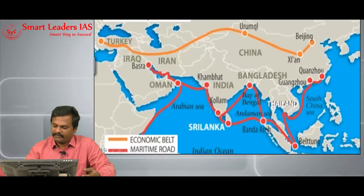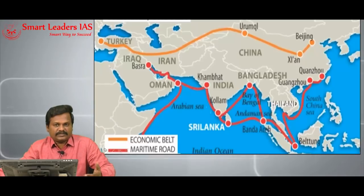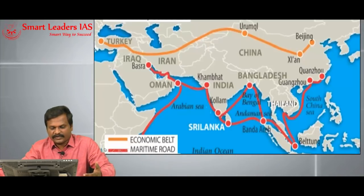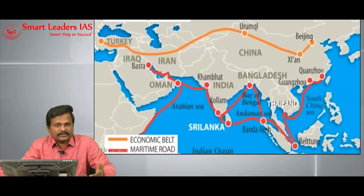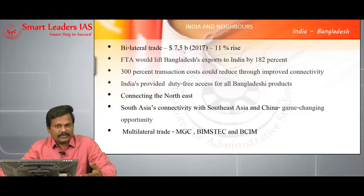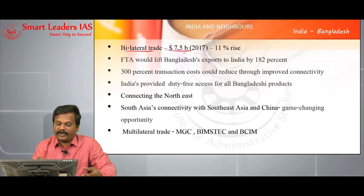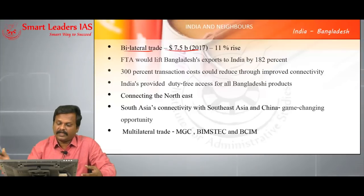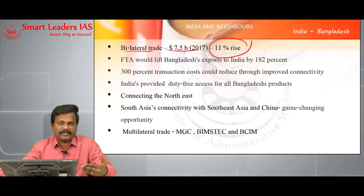This is the One Belt, One Road Initiative — a mammoth infrastructural connectivity through which China is planning to connect more than 60 countries spanning across continents, with sea connectivity as well as road connectivity planned, and many countries expressing willingness to become partners. Look at the trade potential: bilateral trade is $7.5 billion annually — this is 2017 data, representing an 11% increase compared to 2016. So the trade relationship is growing.